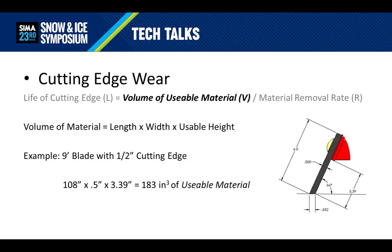Let's start by looking at the volume of usable material. The volume of material is equal to the length times the width times the usable height. As an example, let's look at a 9-foot blade with a half-inch cutting edge. Converting to inches, we have 108 inches of length times a half-inch of width or thickness, and 3.39 inches of usable height. That equates to 183 cubic inches of usable material.